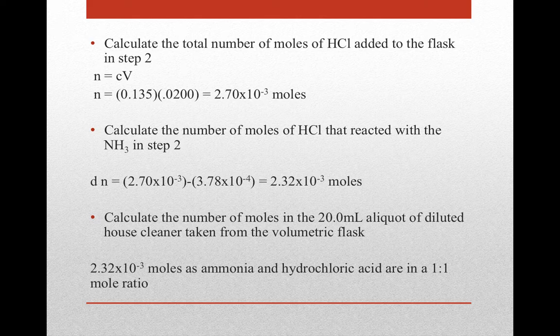Now we calculate the total number of moles of HCl added to the flask in step 2. This is the excess amount — not all the HCl reacted with the ammonia. Using N = CV with the given concentration and volume, we get 2.70 × 10⁻³ moles, which is more than the amount remaining in step 3.